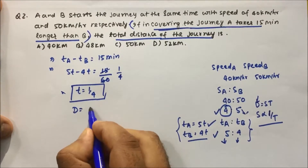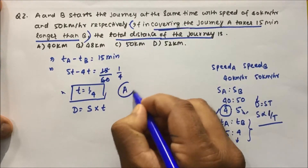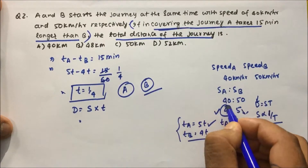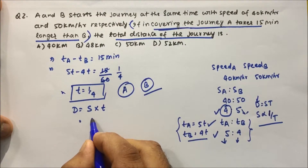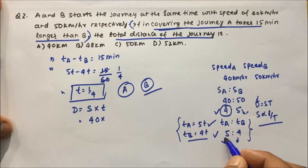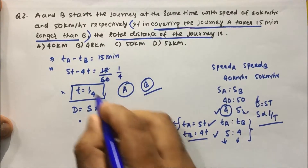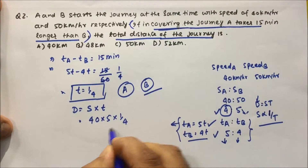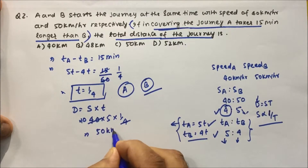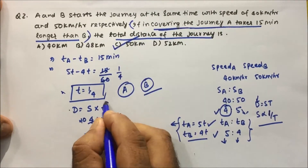Distance = speed × time. We can take either A's or B's speed. Speed of A is 40 km/h and time of A is 5t. So distance = 40 × 5 × (1/4) = 40 × 5/4 = 50 km. So the answer is 50 km.